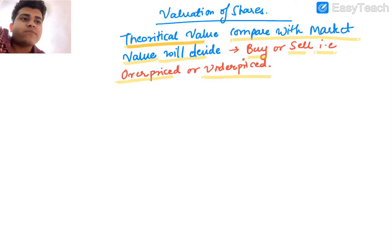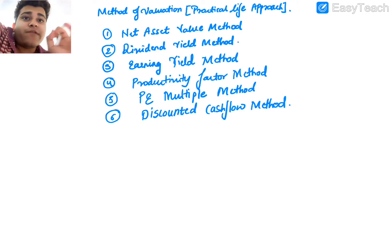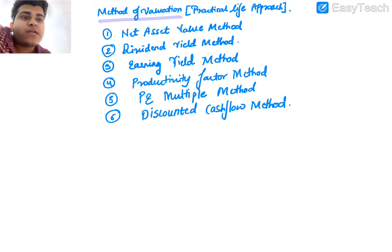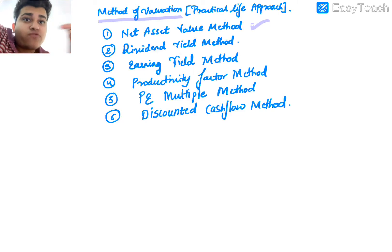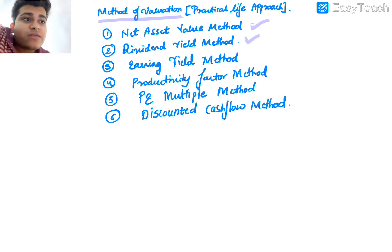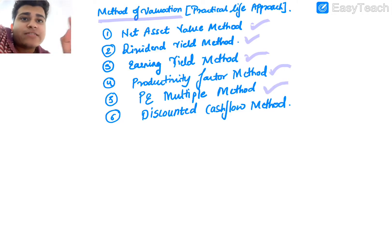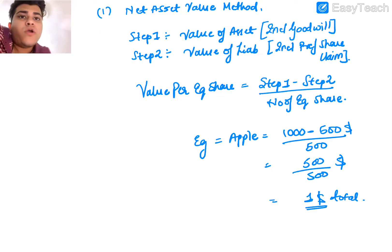Whether the share is overpriced or underpriced will be decided based on that. In this basic valuation chapter, we will understand how to find the exact value of a share. The valuation of shares can be found using: first, net asset value method; second, dividend yield method; third, earning yield method; fourth, productivity factor method; fifth, PE multiple method — where PE stands for price and earnings — and sixth, discounted cash flow method.